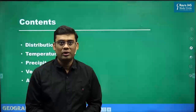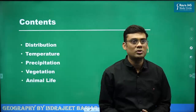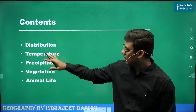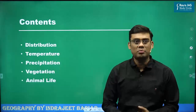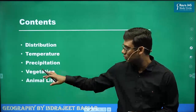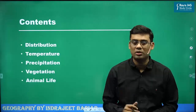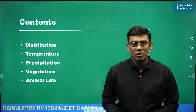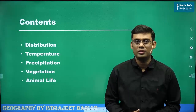In this discussion we are going to talk about the distribution of this particular type of climatic belt or region, along with parameters such as temperature and precipitation. We are also going to include the vegetation type and the animal life found in this particular type of climatic region.